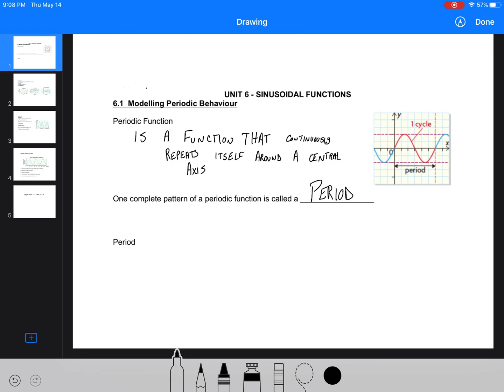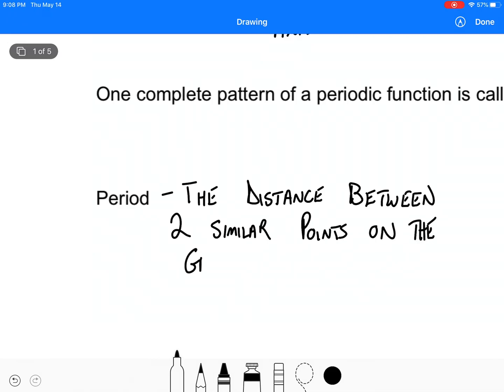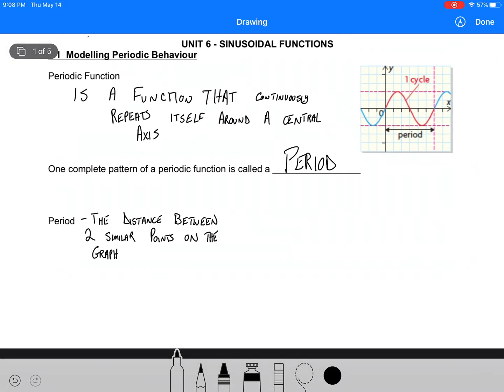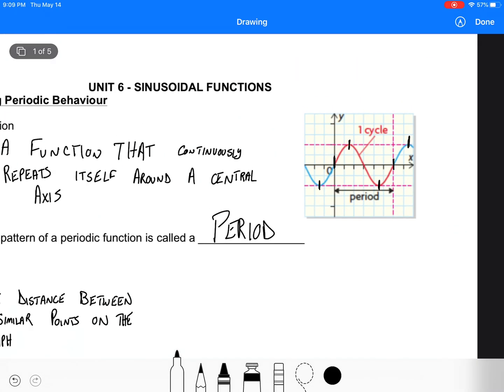One complete pattern of a periodic function is called a period. Now a period is always the distance between two similar points on the graph. A lot of the times we say it's the start or the finish of a function or a cycle. For instance, here we have one period starting here and ending here. But we could also look at the period is here to here. That's one period. Or here to here. It's a length. It's a distance.